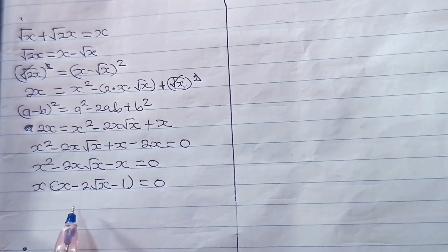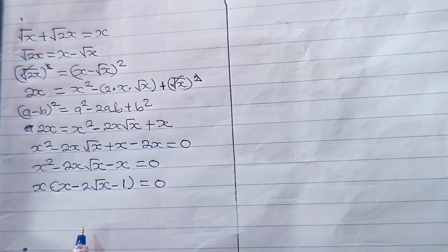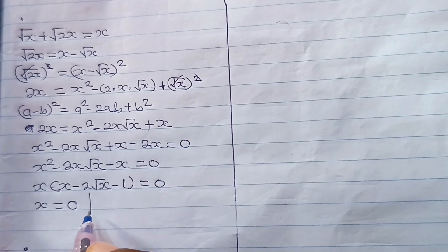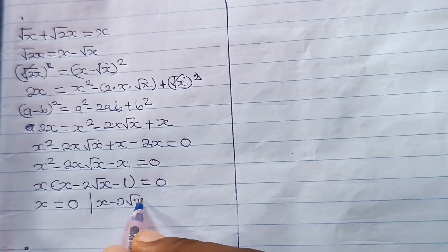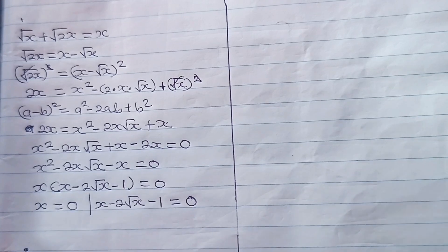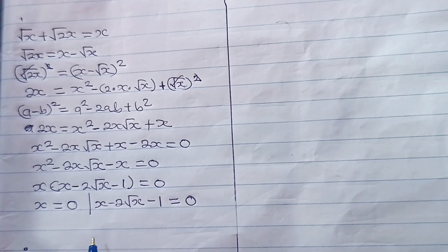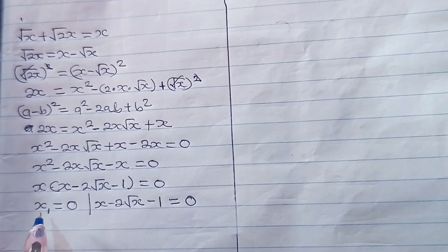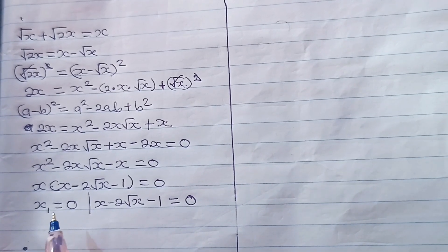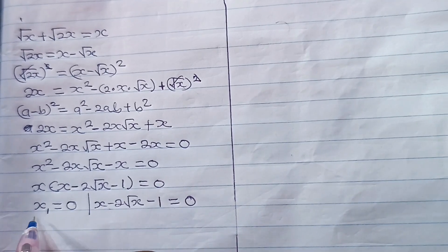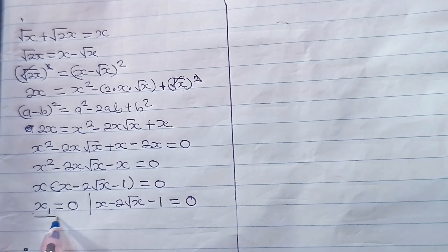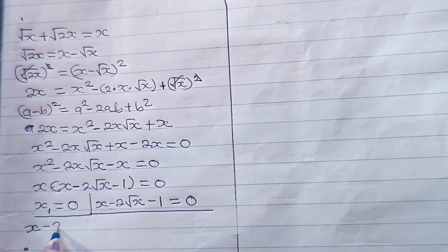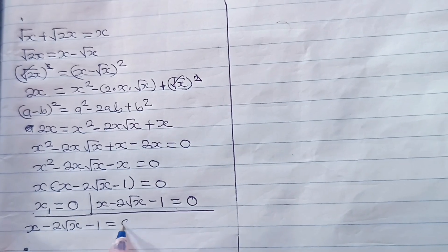At this point, you can see that we have two equations. We have that x is equal to 0, and we also have that x minus 2 root x minus 1 is also equal to 0. So we have gotten the first value of x, which is x equals 0. Now let's concentrate on the second equation: x minus 2 root x minus 1 equals 0.